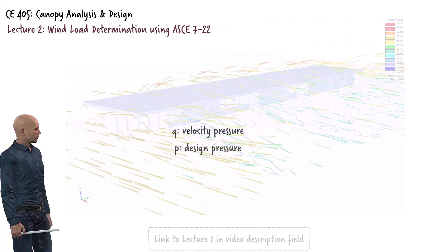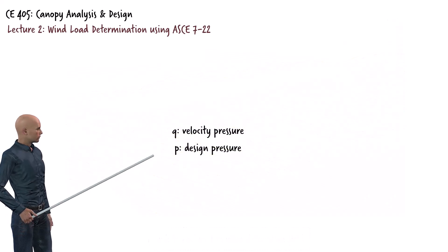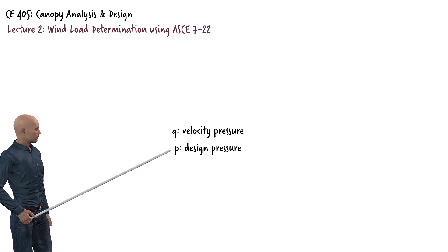According to ASCE 7, there are two main factors to consider when determining wind loads: wind velocity pressure, which we refer to as Q, and wind design pressure, which we call P.